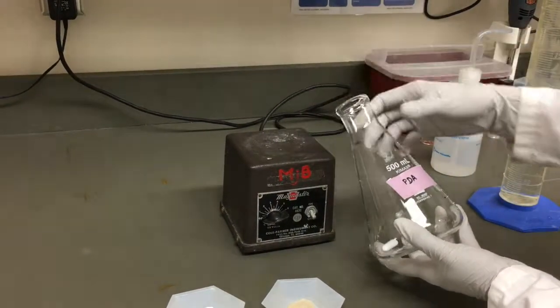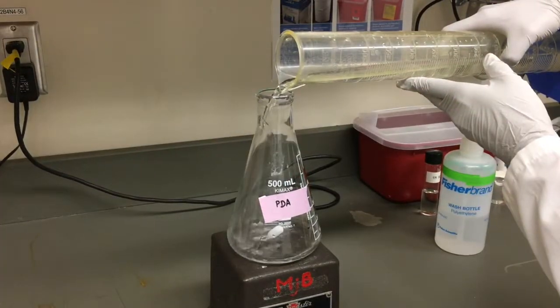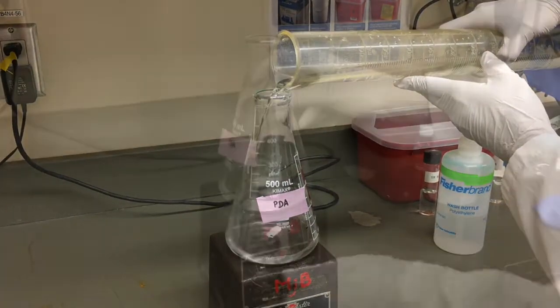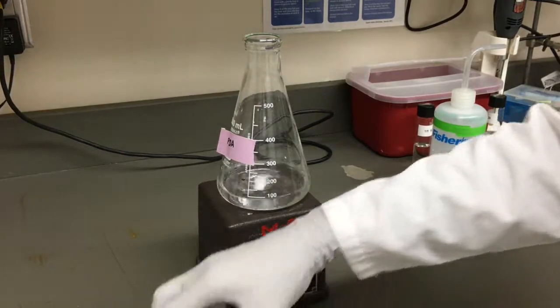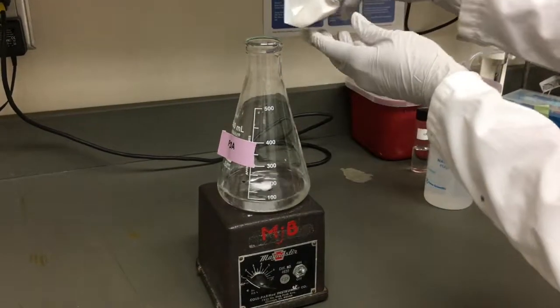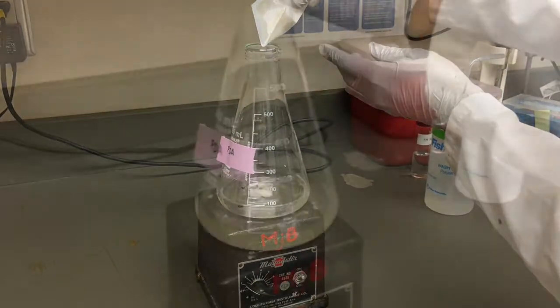Place a stir bar into your empty flask. Pour in about 50-80% of the final volume using distilled water and begin stirring. While stirring slowly, add the powdered media and allow it to dissolve.